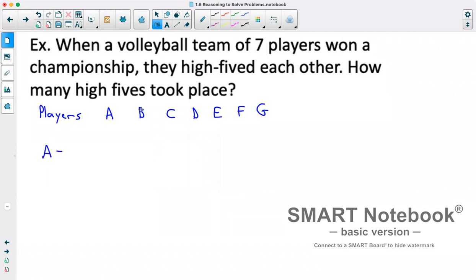Player A is going to high-five player B, also high-five player C, high-five player D, E, F, and G. So they high-five six players total. Player B is going to high-five a total of six players as well, but some were already high-fived. They've already high-fived player A, so we can't count that again. So they will high-five C, D, E, F, and G. So they have five high-fives.